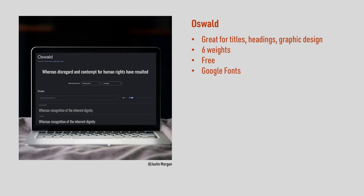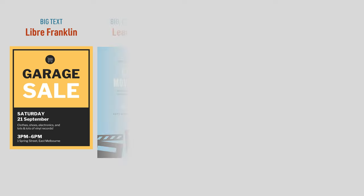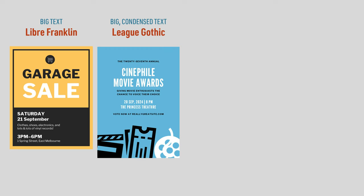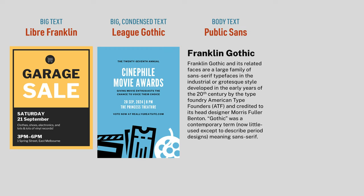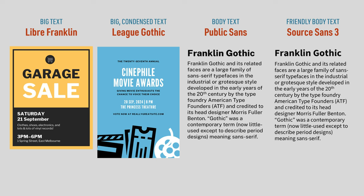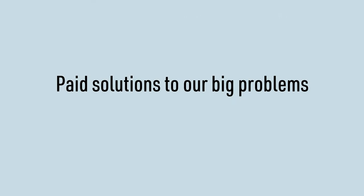To summarize the free options: if you want big text, go with Libre Franklin. If you want big condensed text, go with League Gothic. If you want something that's also great for body text, go with Public Sans. And if you want friendly body text, go with Source Sans 3, which pairs nicely with Oswald for headings. Now let's look at some paid solutions to our big problems.